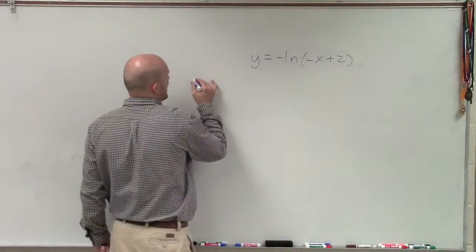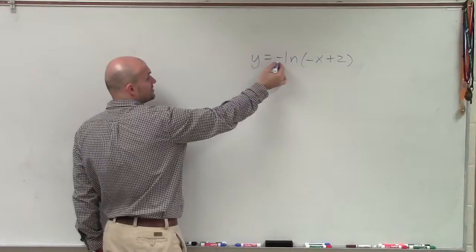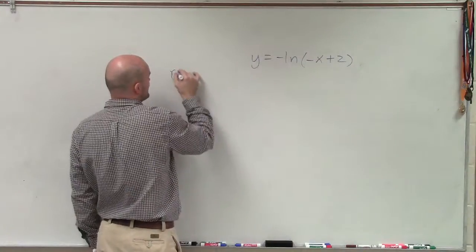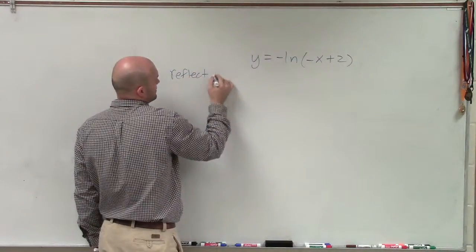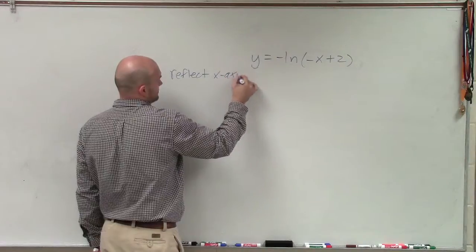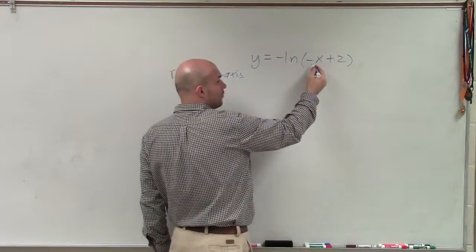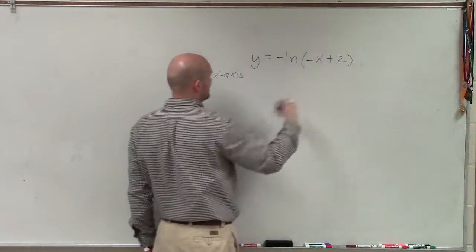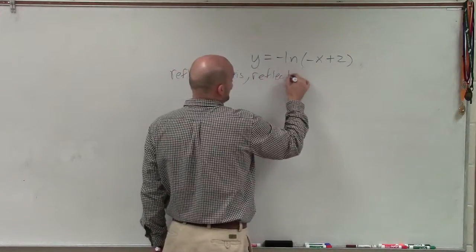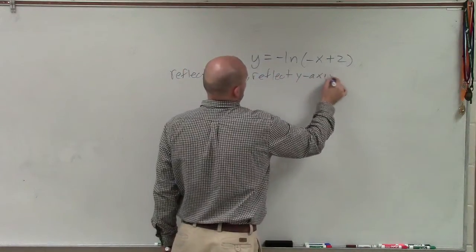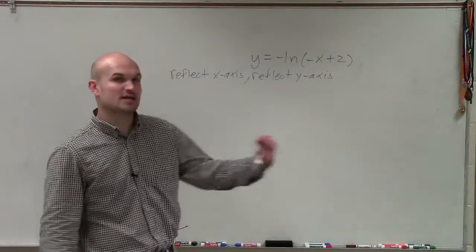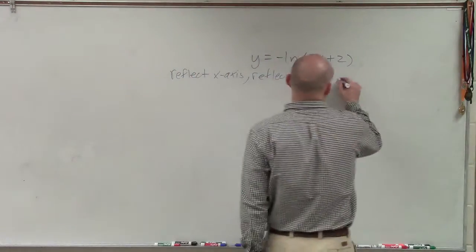So in this case, I have a negative 1 being multiplied by my function, so that's going to tell me to reflect the x-axis. I have a negative 1 being multiplied by my x inside the function, so that's going to tell me to reflect the y-axis. And then I have a positive 2, which is going to tell me to shift left, shift two units left.